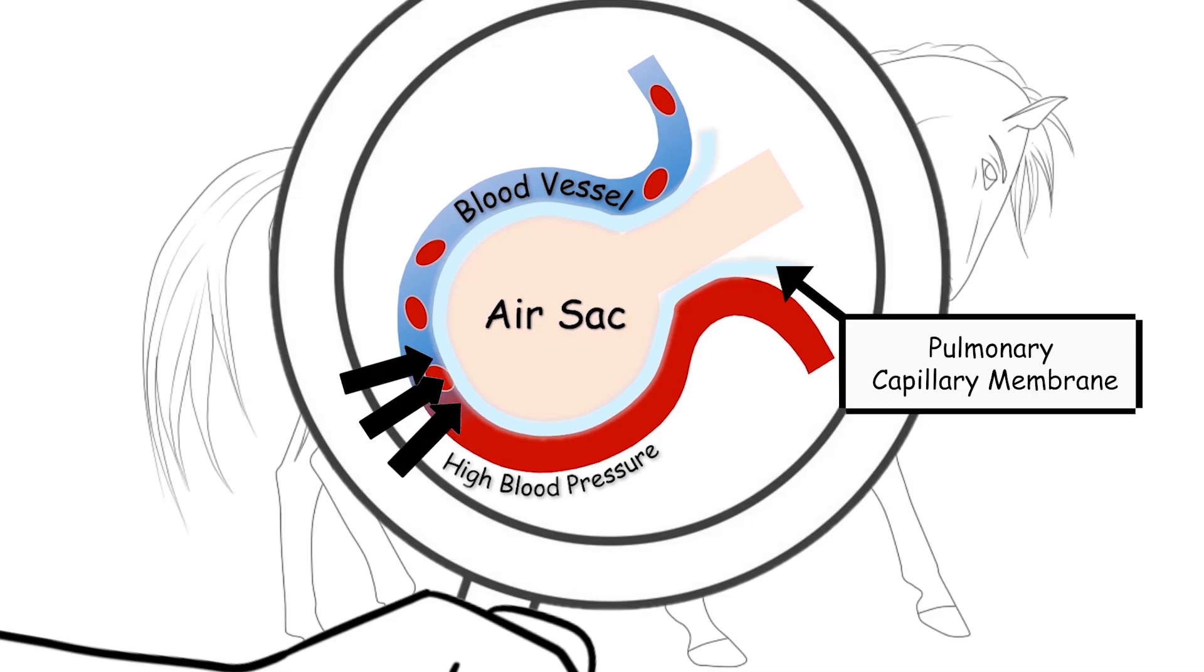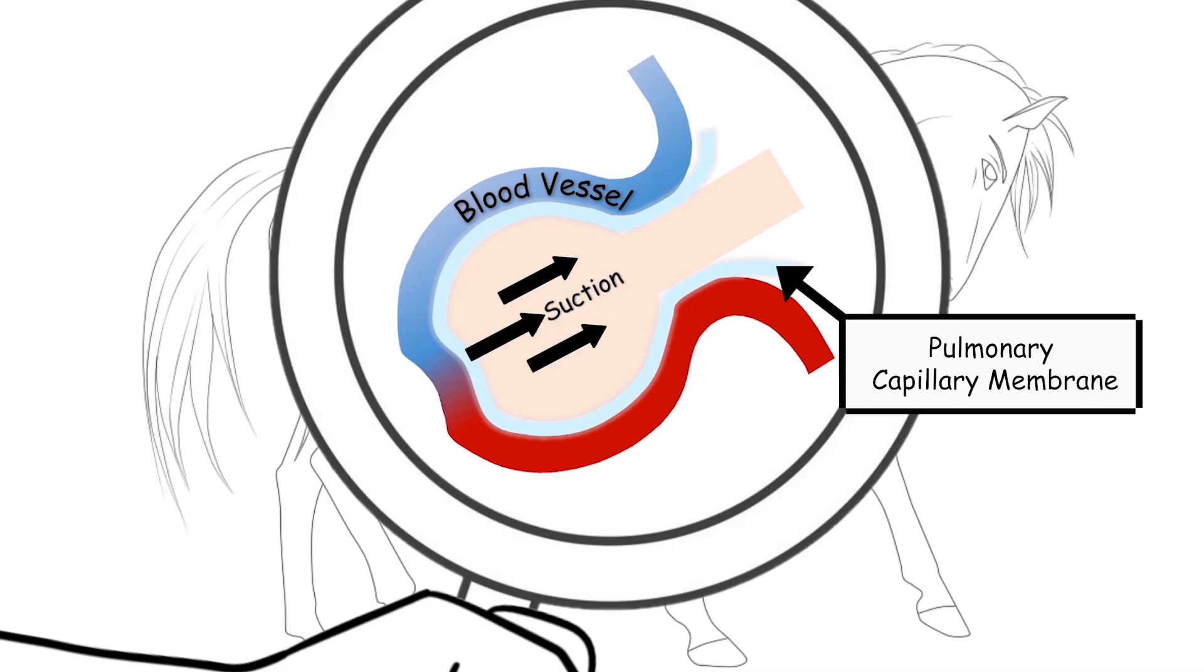The large increase in blood pressure from inside the blood vessels is pushing on the membrane from one side, while on the other side there is a strong suction force that is pulling on the fragile membrane as the horse is inhaling.